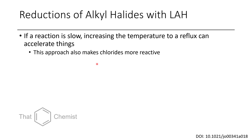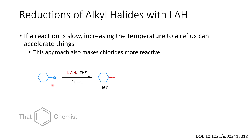If a lithium aluminum hydride reduction isn't proceeding quickly, you can try heating things up, which can also make chlorides more reactive. For example, cyclohexyl bromide — a curious case — shows low conversion after 24 hours at room temperature, unlike cyclopentyl or cycloheptyl bromide which convert reasonably well. However, running the reaction at 65 degrees for 12 hours gives almost full conversion. So these reactions proceed better at higher temperatures — if it's not working, just try heating it up.